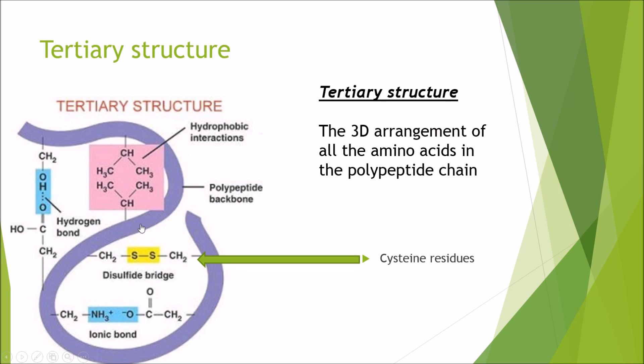Cysteine is a unique amino acid because at the end of the R group you've got sulfur and what this allows is to form a disulfide bridge in which you get a covalent interaction between one sulfur on one cysteine residue and a sulfur on another forming this link here.